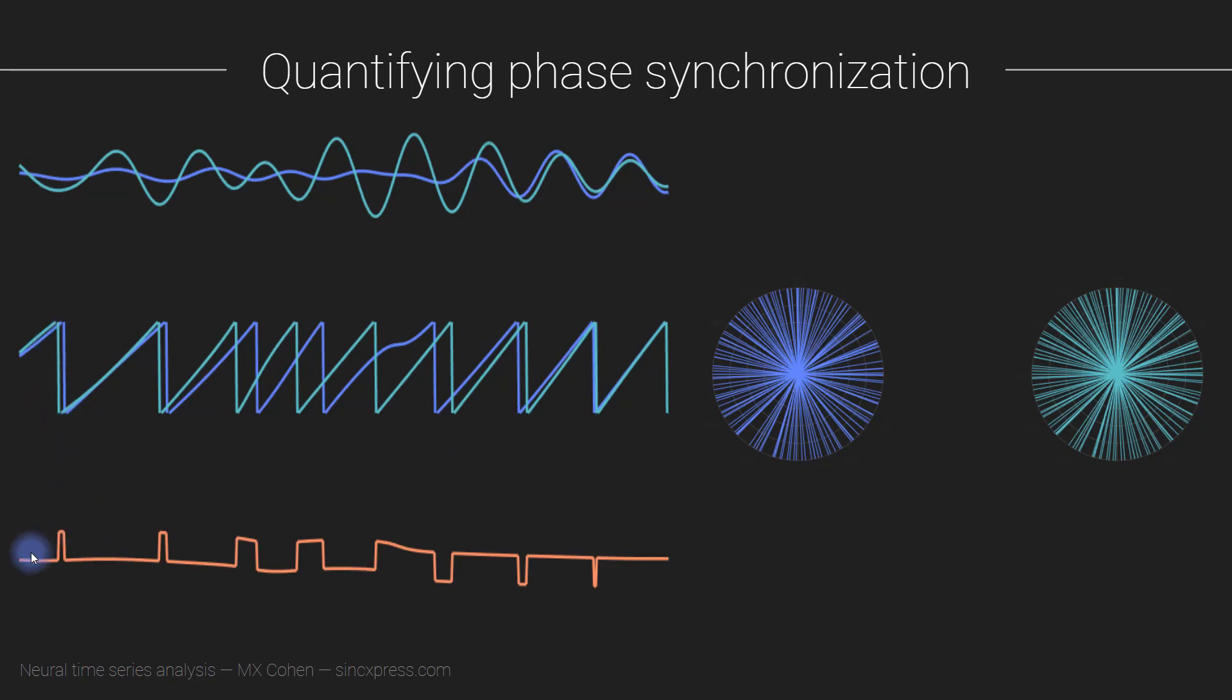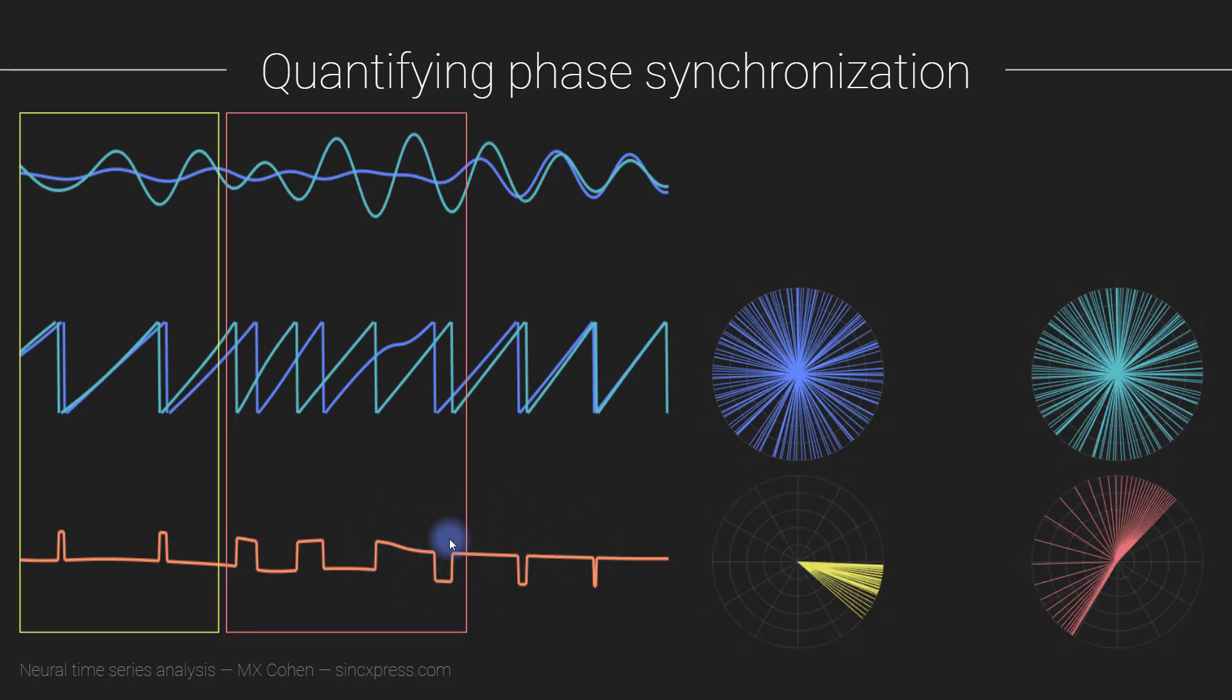You subtract the phase angles like this, that will give you a typically kind of funny looking phase angle difference time series, often look something like this. And then what we do is consider this distribution of phase angle differences.